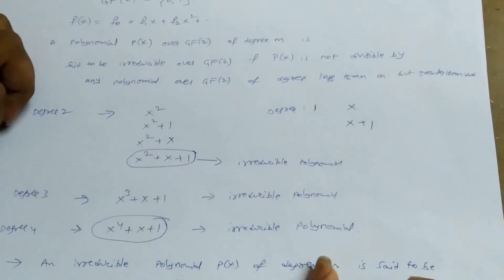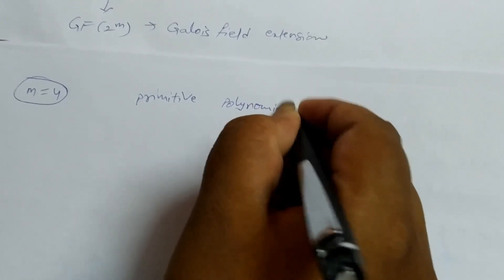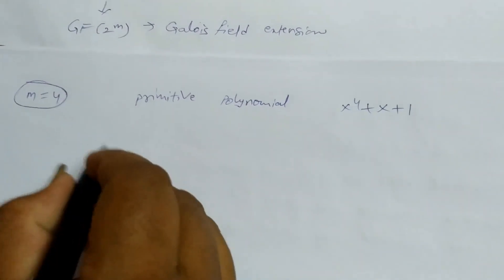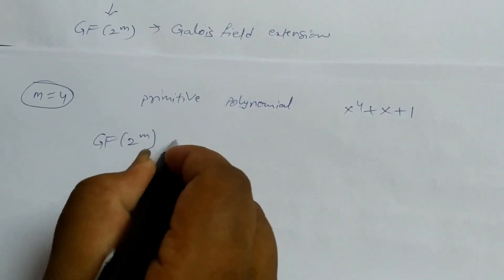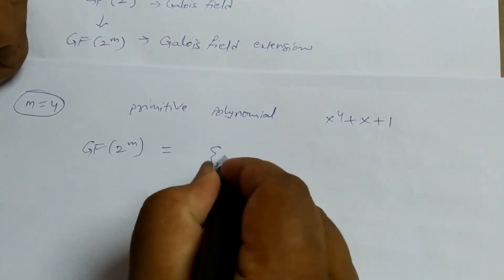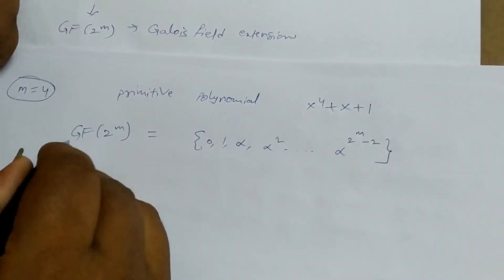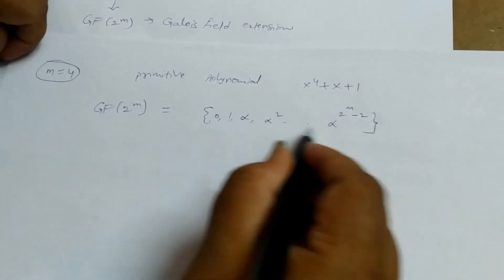How can we represent extension fields? GF(2) and GF(2^m) are the important ones. For m=4, the primitive polynomial is X⁴+X+1. The elements of the extension field GF(2^m) are represented as the set {0, 1, α, α², up to α^(2^m−2)}. For m=4, all elements can be calculated by setting P(α)=0.